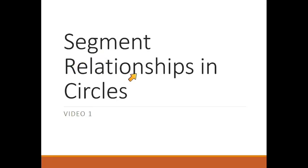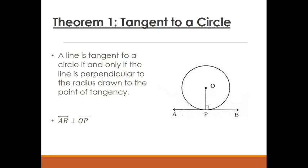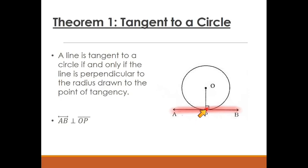In this video, we're going to look at segment relationships in circles, starting with a couple of theorems. Theorem 1 is about a tangent to a circle. A line is tangent to a circle if and only if the line is perpendicular to the radius drawn to the point of tangency. A tangent line intersects a circle in only one point — line AB is our tangent line, intersecting circle O at point P, which is the point of tangency.